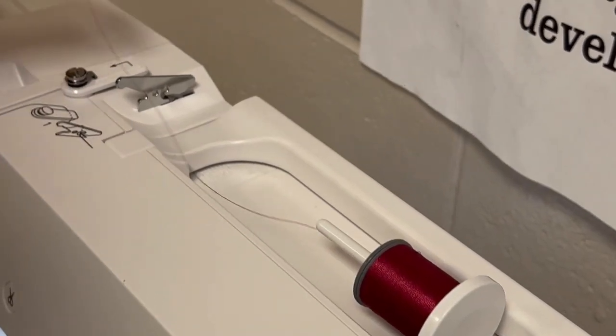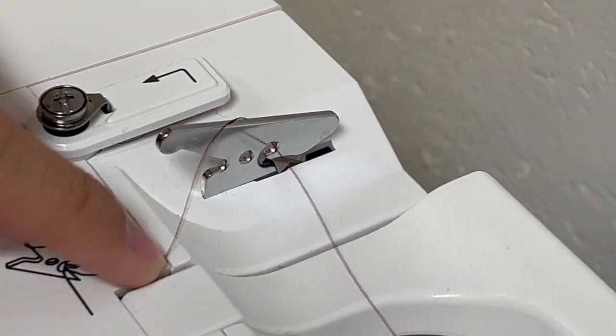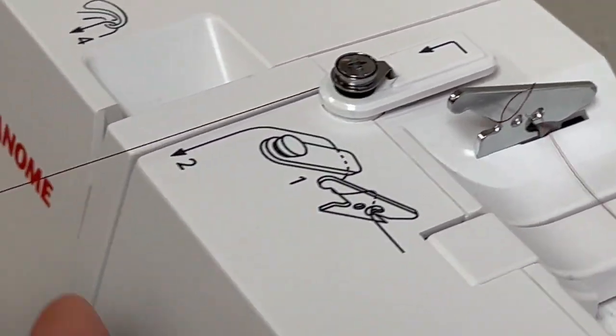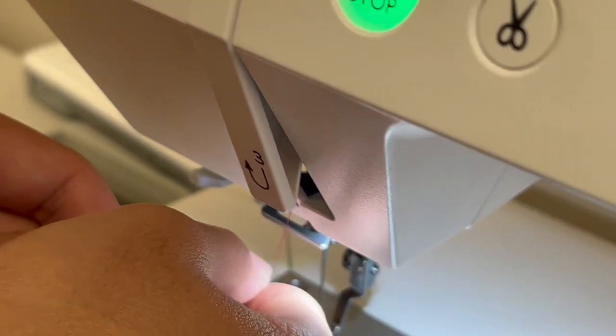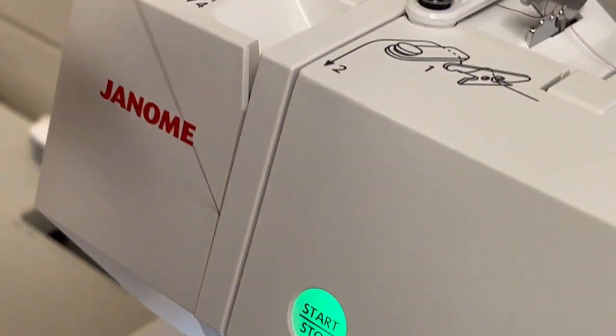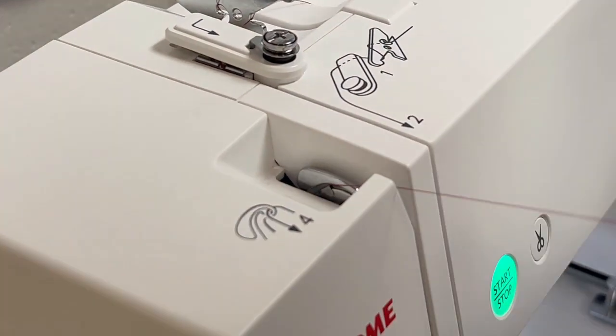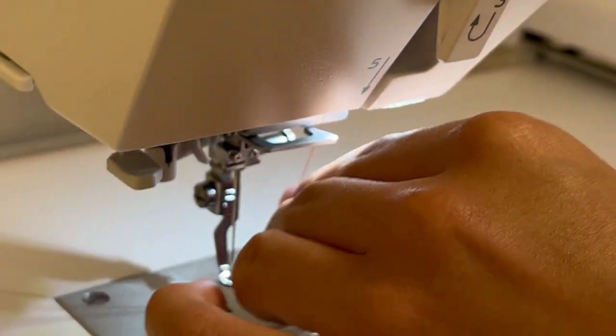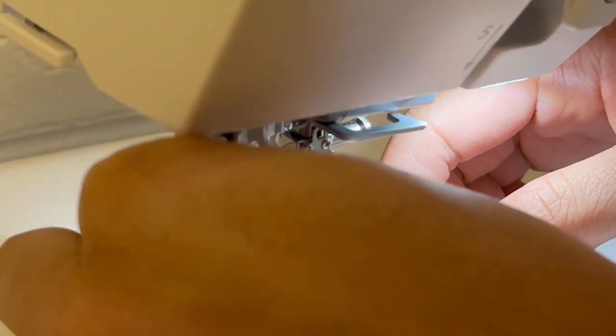Follow the steps shown on the machine. Make sure the thread is secure on all parts. Make sure the thread goes through the guard. Put the thread through the small hook next to the needle.